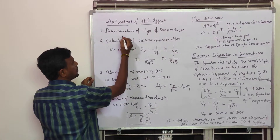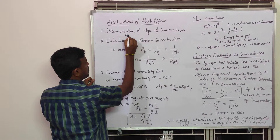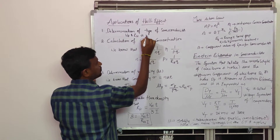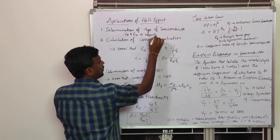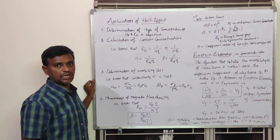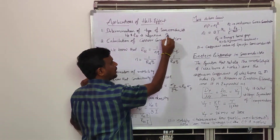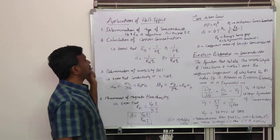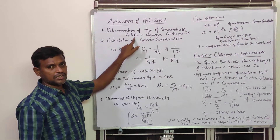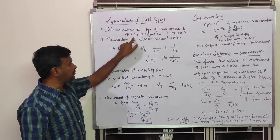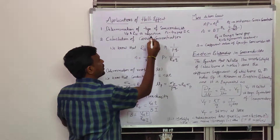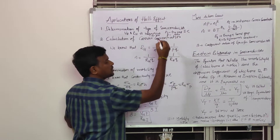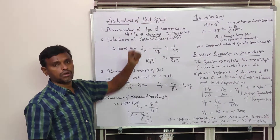To summarize: if VH (Hall voltage) or RH (Hall coefficient) is negative, the type of semiconductor is N-type. If VH or RH is positive, then the material is a P-type semiconductor. This is one important application of the Hall effect.